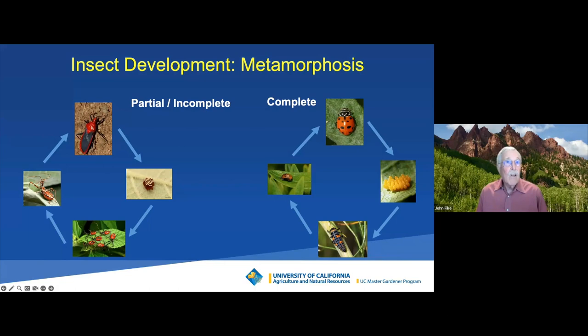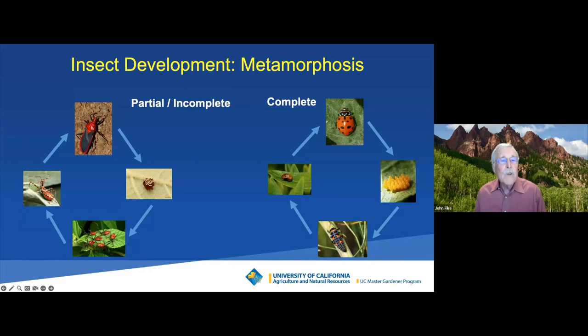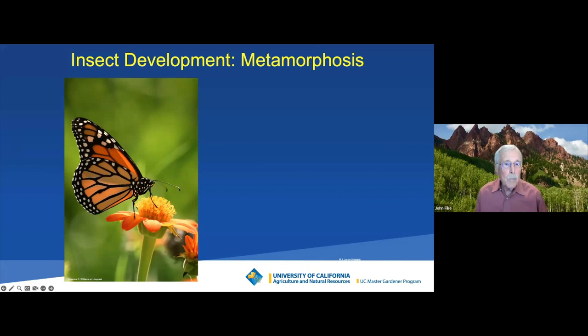So why did I bother showing you all of this? Because when we're talking about a good bug or a bad bug, it's often these immature forms — the larval forms or the nymph forms — that do the good or the bad. Let me give you an example. This is the monarch butterfly. Everybody knows it. We love to have butterflies in our yard — they're beautiful, they have comfort and serenity.